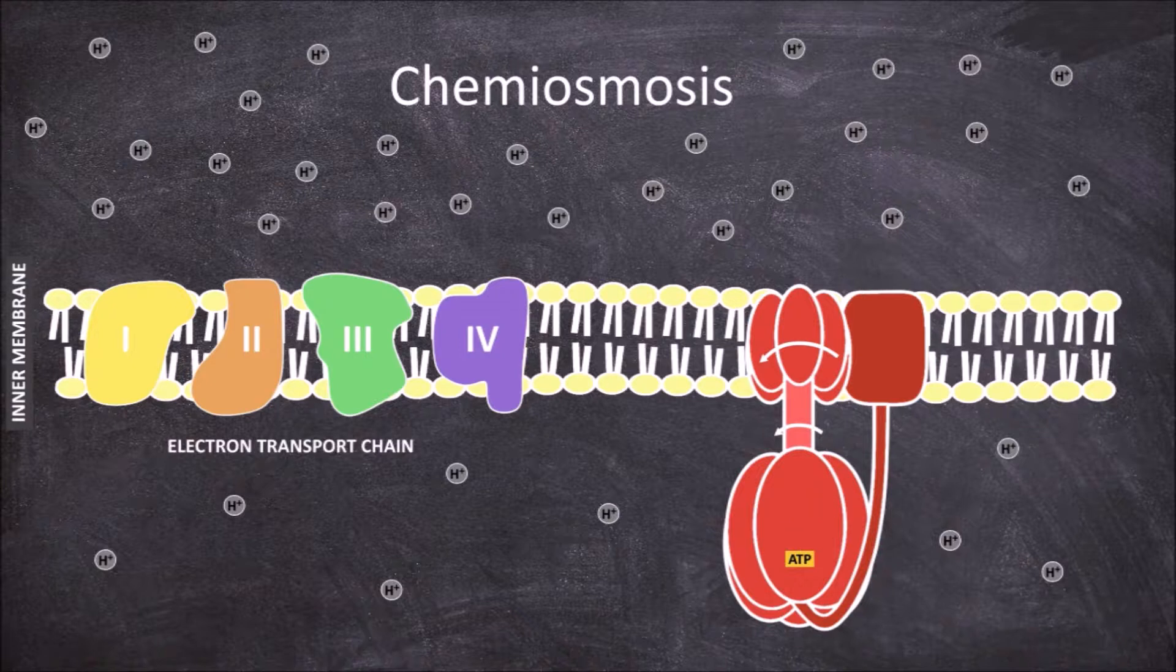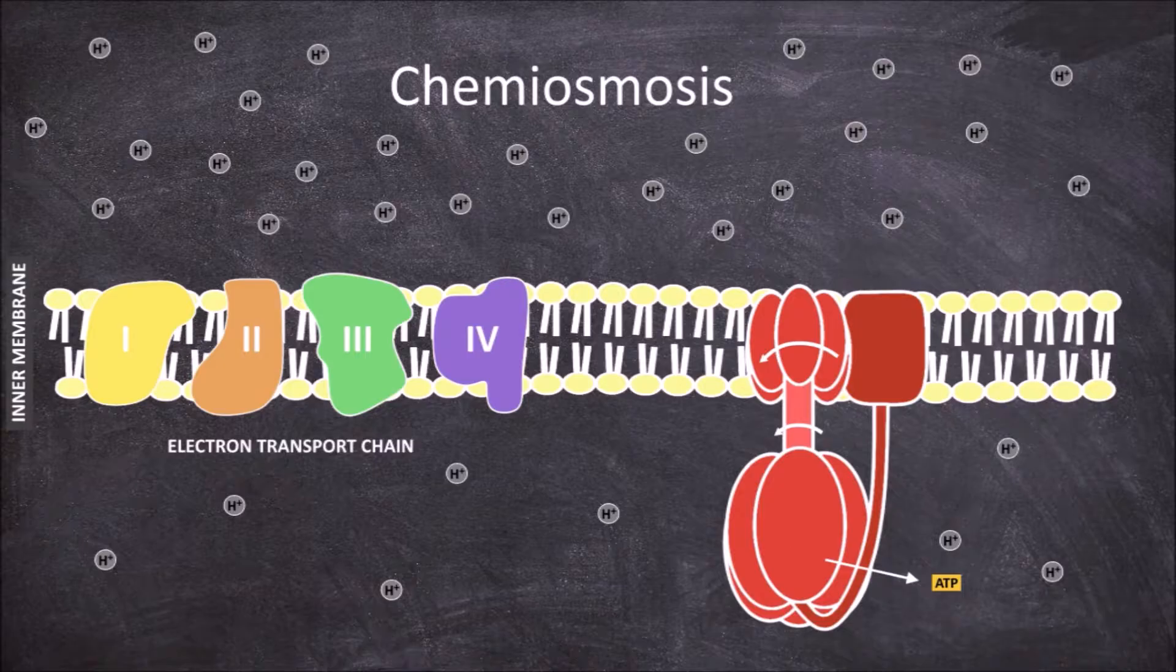As the internal rod continues to rotate and change the structure of the knob subunits the ATP is released and is able to bind more ADP and phosphate.